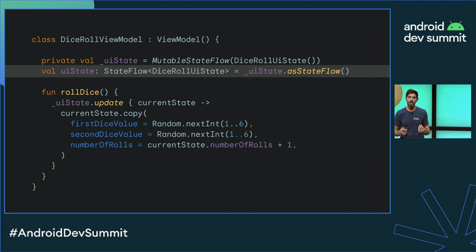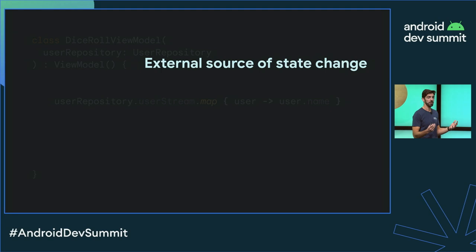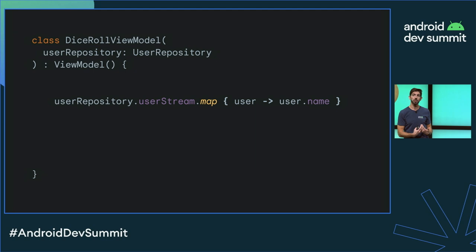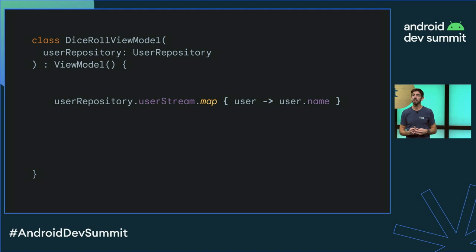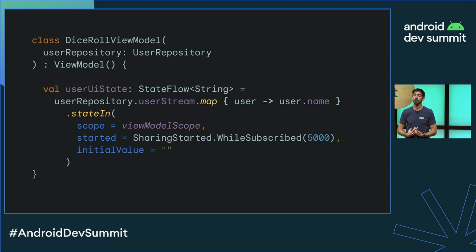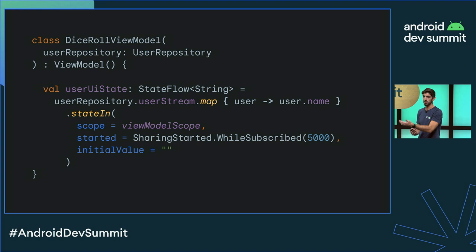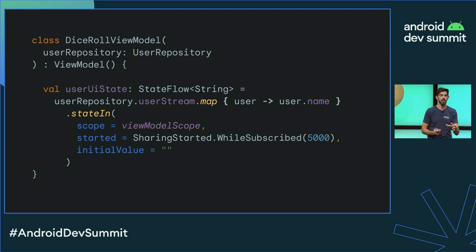For an external source of state change, imagine we want to greet the user and display their name. We get that information from the data layer via a UserRepository that exposes a user stream of type Flow. We map this flow to get the name out of the user object. To expose an observable data holder, we use the stateIn operator to convert our Flow to StateFlow. We pass in the ViewModel scope — defining how long the StateFlow lives in memory — and a started policy of WhileSubscribed(5000), which cancels upstream flow collection when there are no collectors for more than five seconds. The UI then collects from this user UI state.